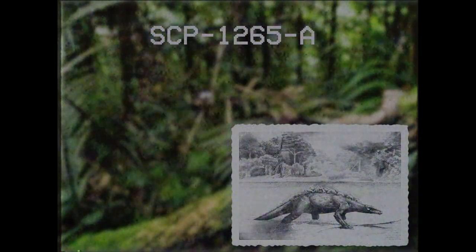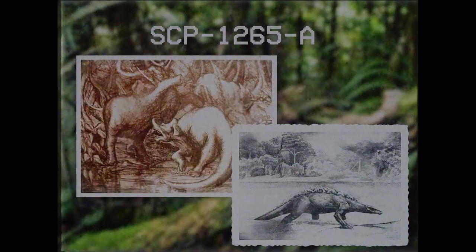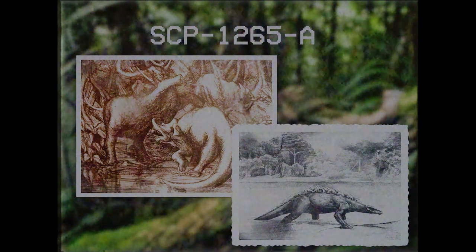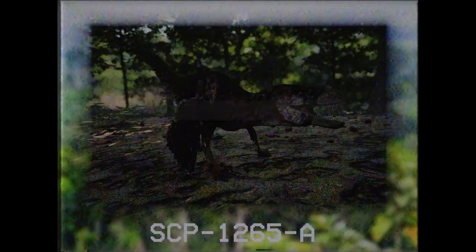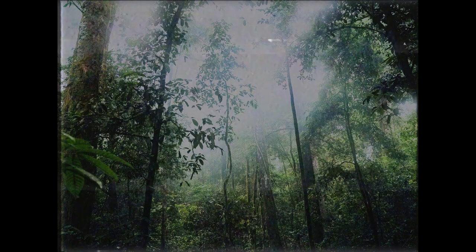Varias instancias de SCP-1265-A se han integrado con el folclore de varias tribus del área cercana, creando famosas leyendas y avistamientos de criaturas denominados coloquialmente como críptidos. Las instancias de SCP-1265-A, incluso los carnívoros, no muestran agresión ni temor hacia los humanos a menos que sean provocados. Solo tres miembros del personal de la fundación han sido asesinados como resultado de haber provocado accidentalmente una instancia de SCP-1265-A. Las instancias de SCP-1265-A no son capaces de abandonar SCP-1265, ya que se desmaterializarían al cruzar la frontera de la zona, para volver a materializarse a al menos 3 kilómetros de la frontera, sedados.